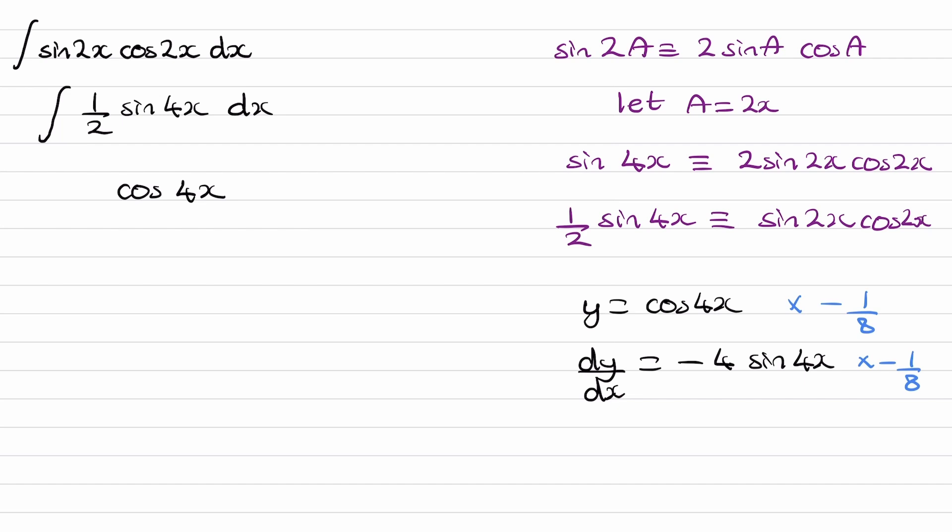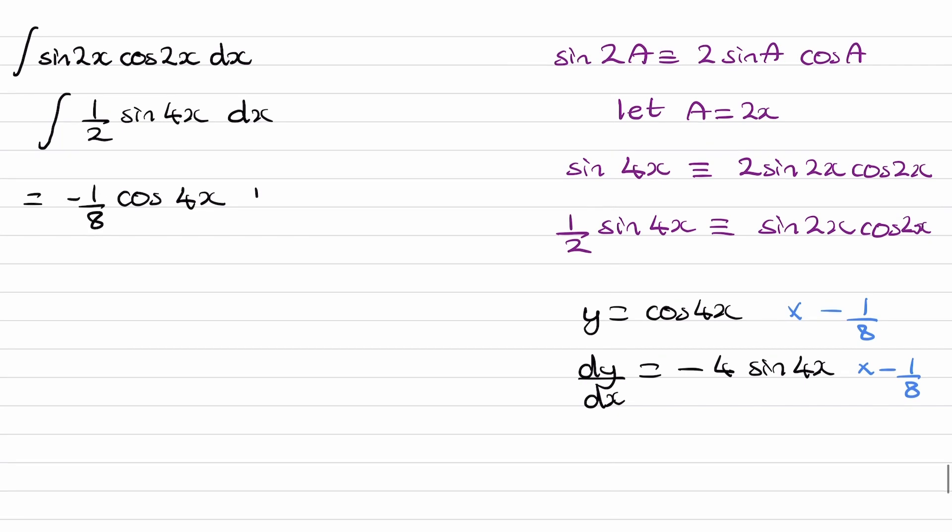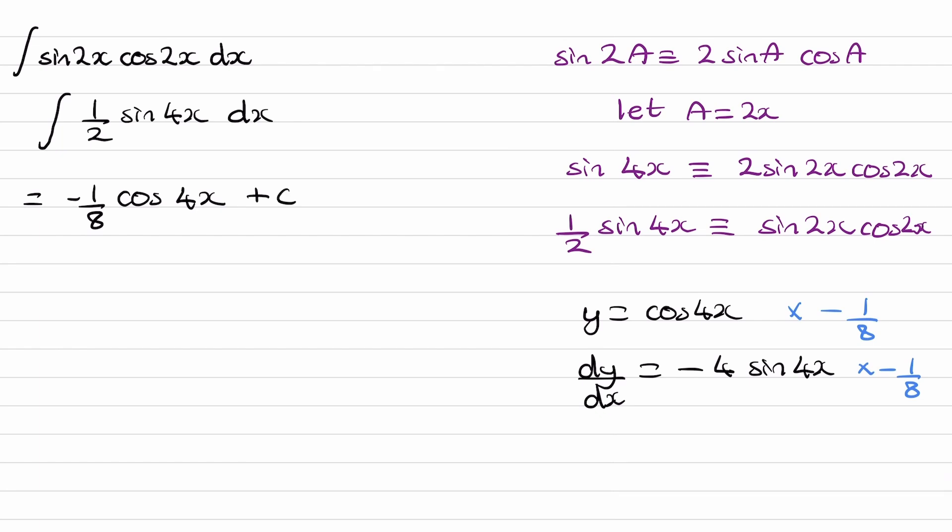And therefore, in front of this cos 4x, we should have minus an eighth plus c, and that will be our final answer.